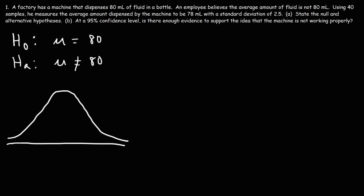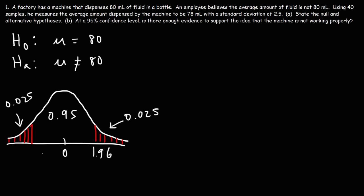Let's draw a normal distribution and shade the area to the left and the area to the right. The confidence level is 95%, or 0.95, which means the area of each shaded region is 0.025 on both sides. The z-value that corresponds to a 95% confidence level is 1.96. These are the critical values — they separate the rejection region from the fail-to-reject region. The shaded area is the rejection region.